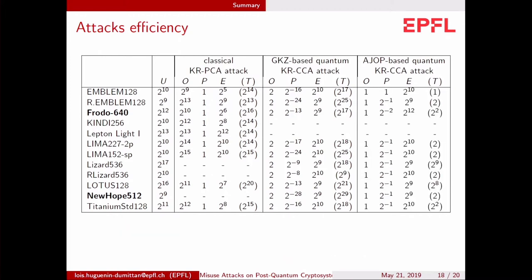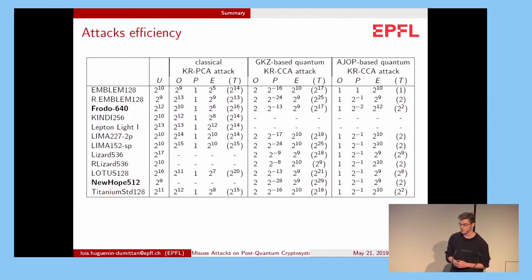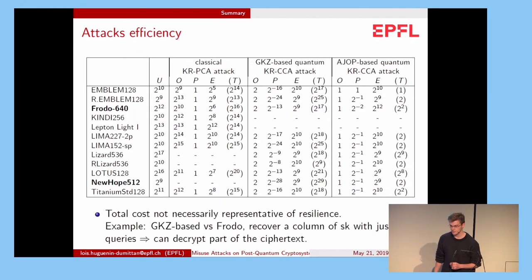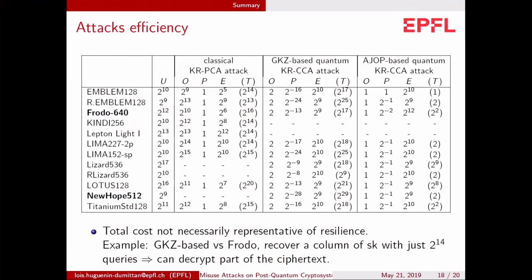And as we expected, the Alagic attack works extremely well for most of the schemes. Only for Lizard and Lotus, where we have more than one or two expected queries. Now, as a final remark, I want to say that the total cost, the last column T, is not necessarily representative of the resilience of a scheme. So, for example, if we take the GKZ-based attack against Frodo, we can actually recover a column of the secret key. The secret key is a matrix. We can recover a column of it with only an expected number of queries 2 to the 14. And with this column, we can already decrypt part of the ciphertext and maybe recover the entire secret key by other means.